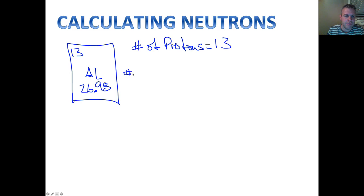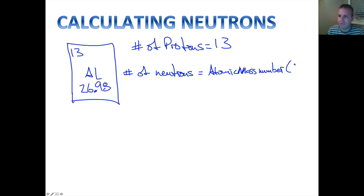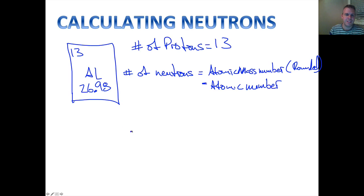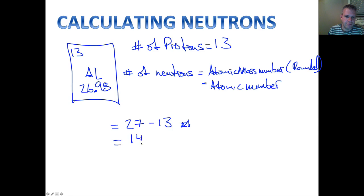There's a formula for this: the number of neutrons is equal to the atomic mass number — which we're going to round — minus the atomic number. So in this case, the number of neutrons is equal to our atomic mass number rounded, which is going to be 27, minus our atomic number, which is 13. That's going to give us 14. So that means there are 14 neutrons. The number of neutrons is equal to the atomic mass number, rounded always to the nearest whole number, subtracting the atomic number.